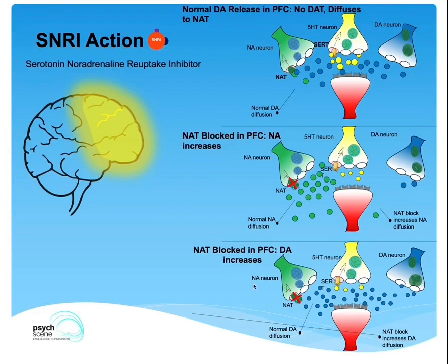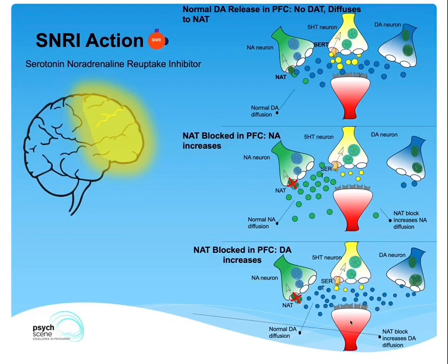So in summary, SNRIs increase noradrenaline and serotonin, but despite not acting directly on the dopamine transporter, they still increase dopamine in the synaptic cleft, as blocking NAT increases dopamine.